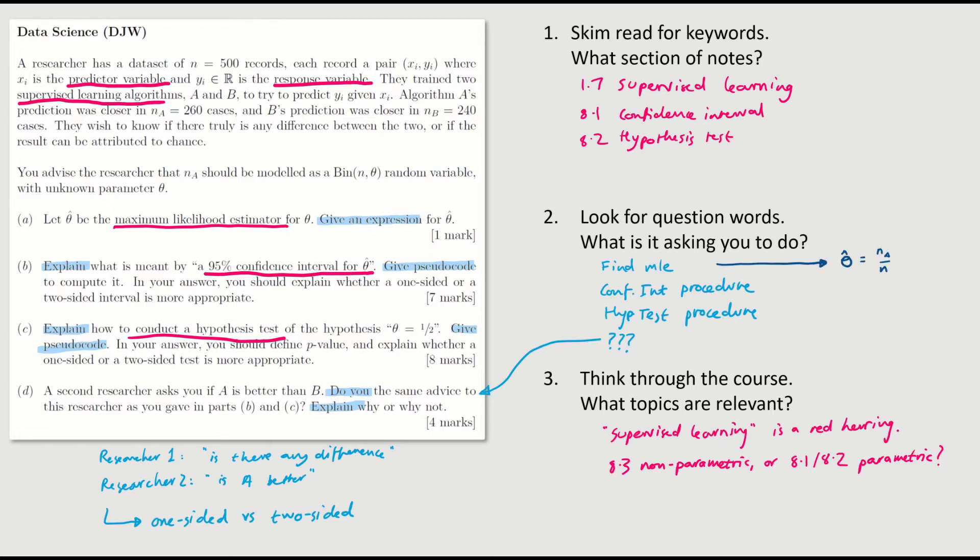First, part A. Give an expression for the maximum likelihood estimator theta hat. The question actually just says give an expression. It doesn't say derive or calculate or anything like that. It says give an expression. It's asking us for the answer. So all we need to do is write down the answer. It's only worth one mark. So that's also a hint. It's not asking for anything complicated. Let's get on with the serious bits of the question.